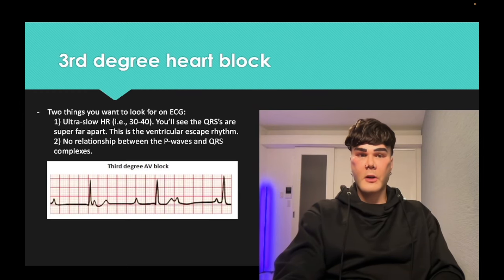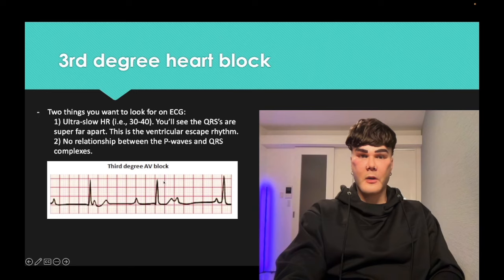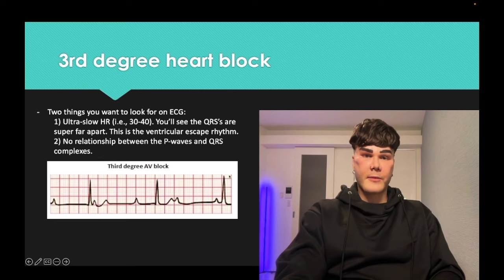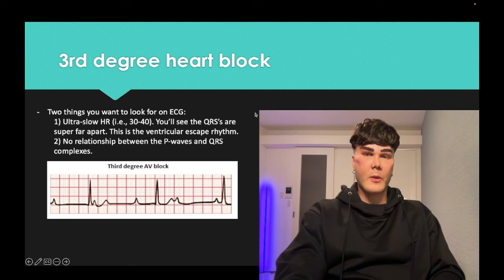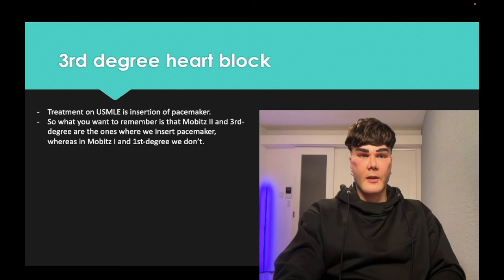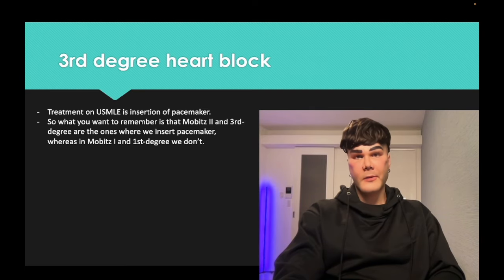Third degree heart block: look for very far distances between the QRSs — a 30 to 40 beats per minute ventricular escape rhythm. There's no relation between the P waves and QRSs because there's complete severance of conduction between atria and ventricles at the AV node. Treatment is pacemaker. So Mobitz 2 and third degree get a pacemaker, whereas Mobitz 1 and first degree do not.